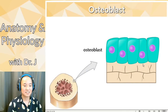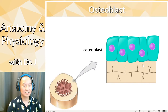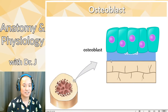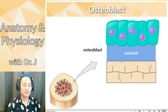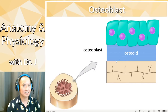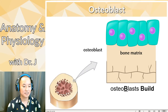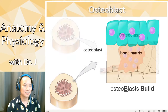So osteoblasts make that osteoid — rich in collagen — and then minerals like calcium and phosphate are added to make a fully developed bone matrix. Osteoblasts build.